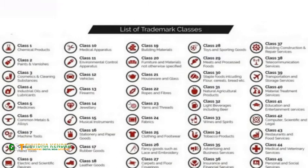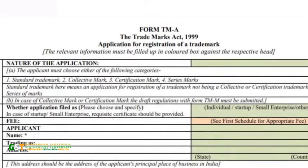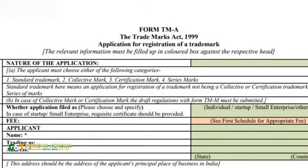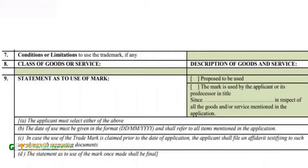The Trademark Act classifies goods or services in various classes. Class 1 to 34 describe various kinds of goods and class 35 to 45 describe the kinds of services. The application form for registration of trademark is filed in form TMA, where the applicant is required to mention the class under which such person is applying for registration of the trademark.